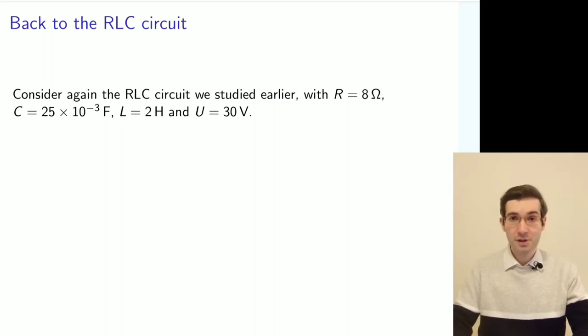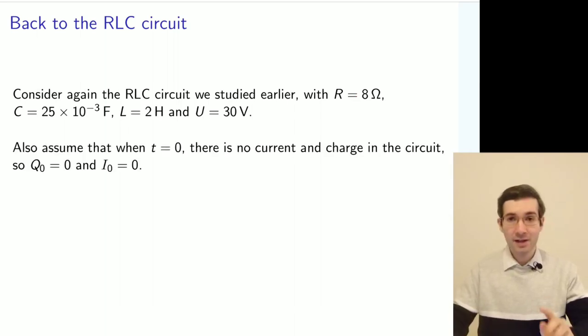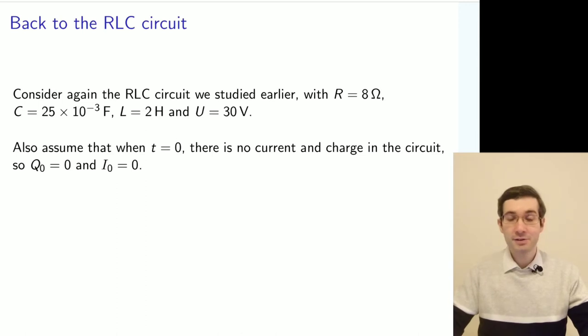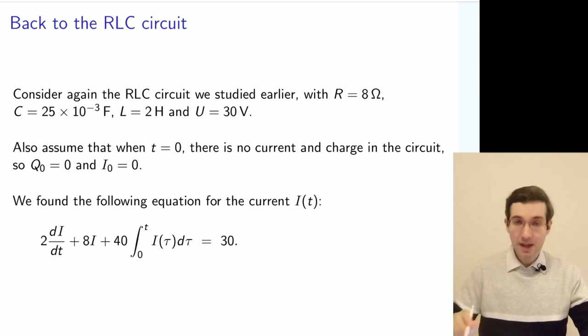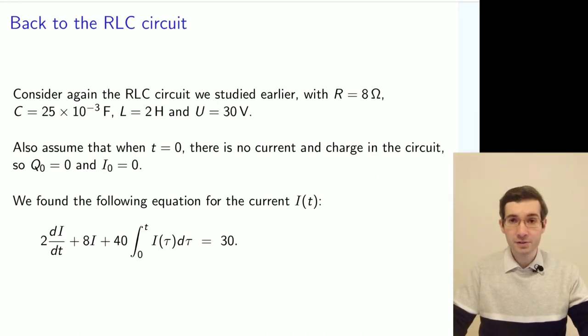At the beginning of this course unit we looked at a specific example of an electric circuit with the capacitance, inductance and resistance. And now we'll assume that there was no charge and no current at the circuit at the beginning of observations. And we have shown that the circuit is described by this integrated differential equation.